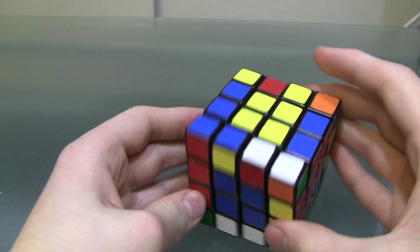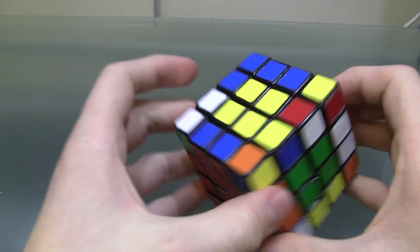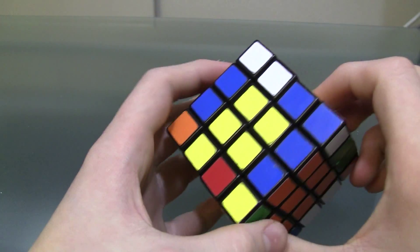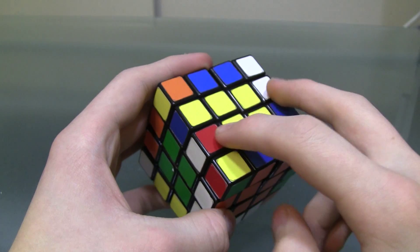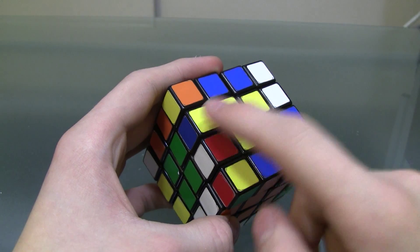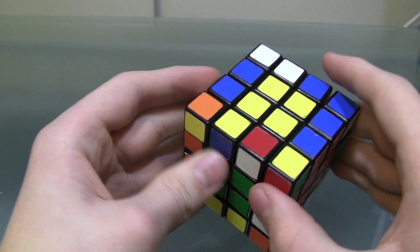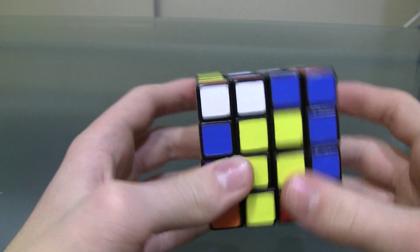So for this, you're going to need to learn one algorithm, and this is the only parity case you can have on a 4x4, which is where these two are in the wrong orientation. So this one needs to go over here, and this one needs to go over here. So in the wrong place.